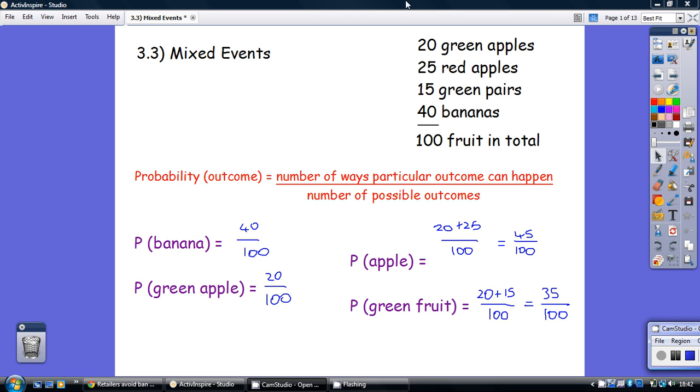Probability of green fruit, well, what green fruit have we got? We've got 20 here, 15 here. So that's 35 bits of green fruit. Out of 100, that's 35 out of 100.